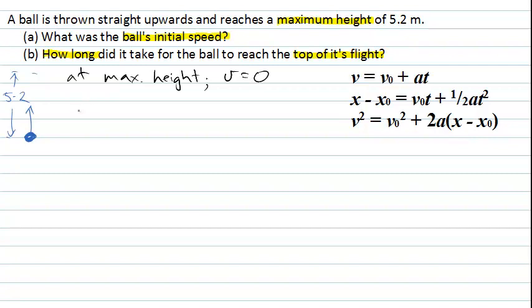So in fact, we know some quantities here. We know that if our displacement, which we'll write as x minus x₀, our change in displacement, if that is 5.2 metres, then we know our velocity at that time is zero.